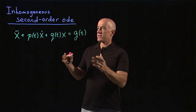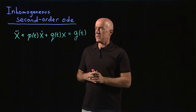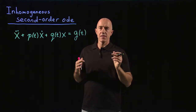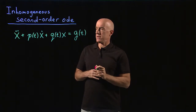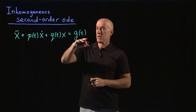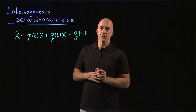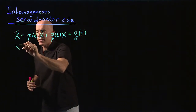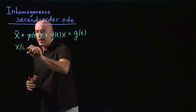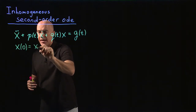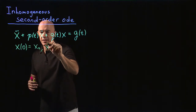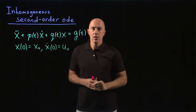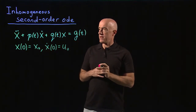So how do we solve this inhomogeneous differential equation? There's a three-step method. Of course, to have a unique solution we also need two initial conditions: x of zero equals x naught and x dot of zero equals u naught. So the three-step method.